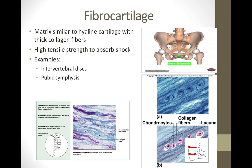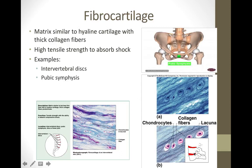Fibrocartilage is similar to hyaline cartilage but has relatively thick collagen fibers. It deals with significant amounts of pressure and tension, making it relatively strong. It still contains lacunae with chondrocytes within them. Locations for fibrocartilage include between the pelvic bones at the pubic symphysis — which holds the two pubic bones together — and between the vertebrae as the intervertebral discs, which handle significant pressure and protect the spinal cord.